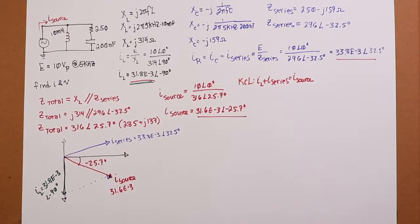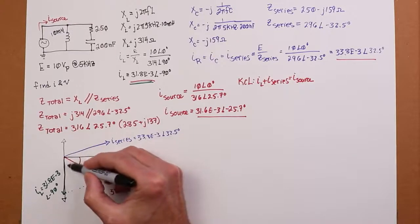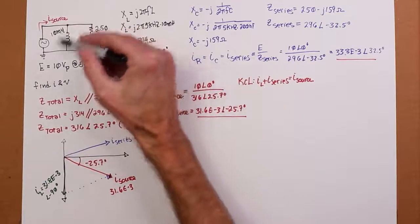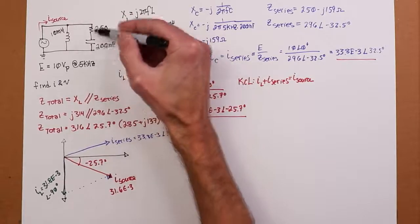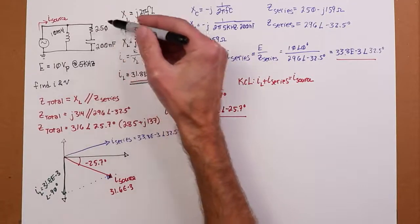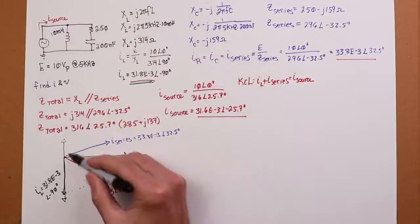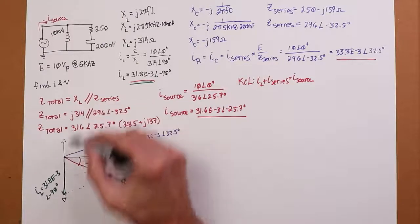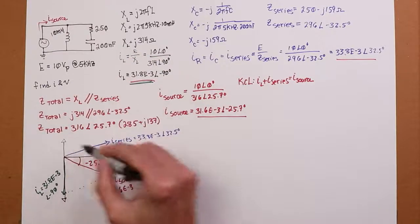KCL says iL plus i series has to equal i source. So let's do a little phasor diagram for that. Everyone is excited about the phasor diagram. So here we go. Let's see, what do we have for a magnitude? Let's put this up here a little bit. So here's our real. I'm going to swap some colors around here so we can see what's going on. So our total, 31.6, that's at negative 25. That's going to be coming out here somewhere. The inductor is at minus 90 at 30-something. And then we've got this 30-something up here at 32, 32 degrees.